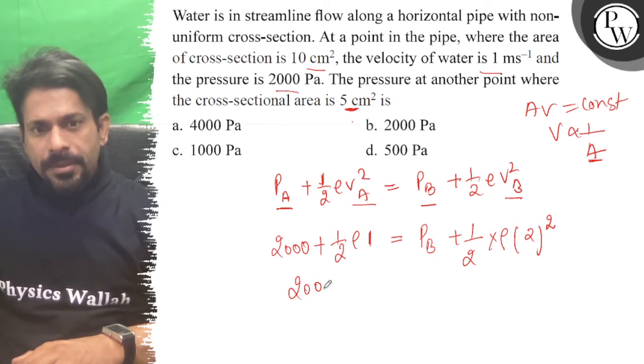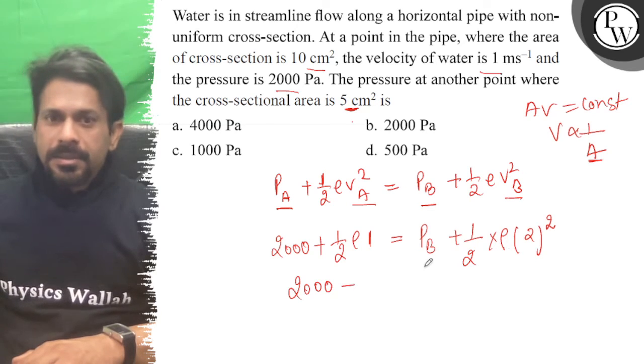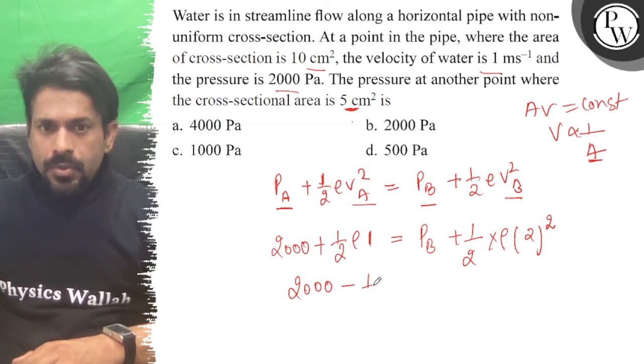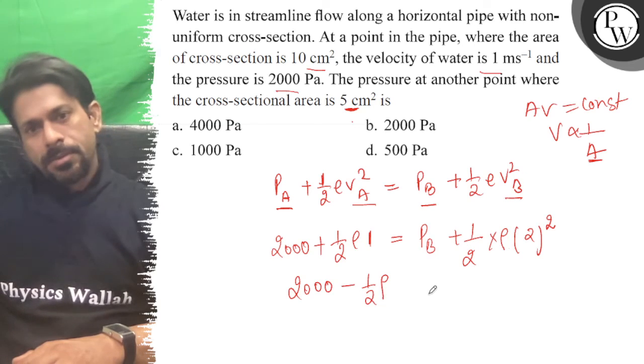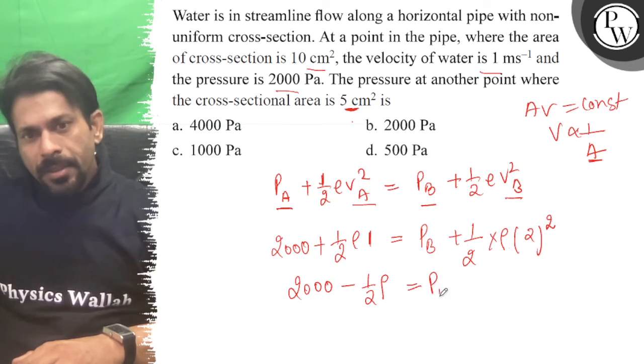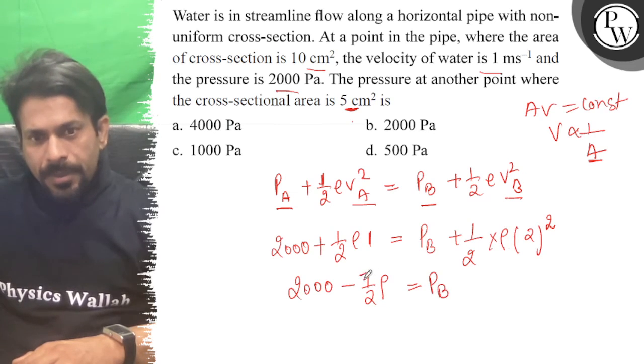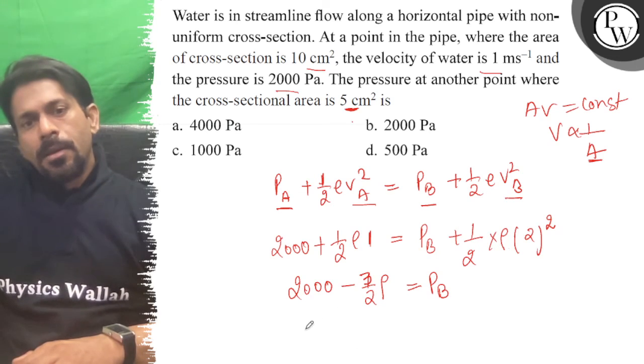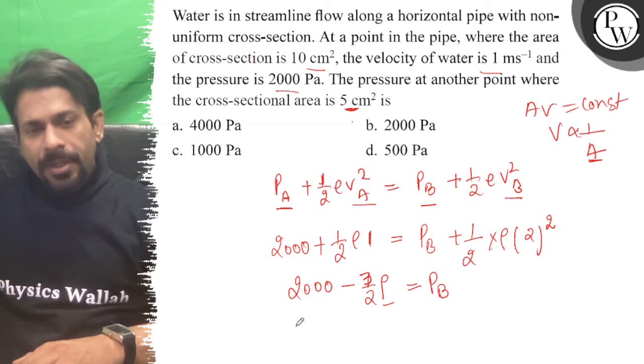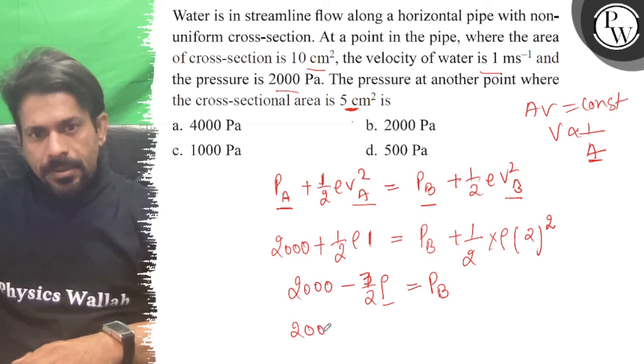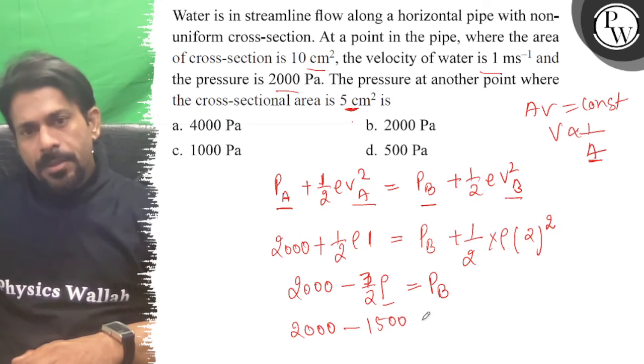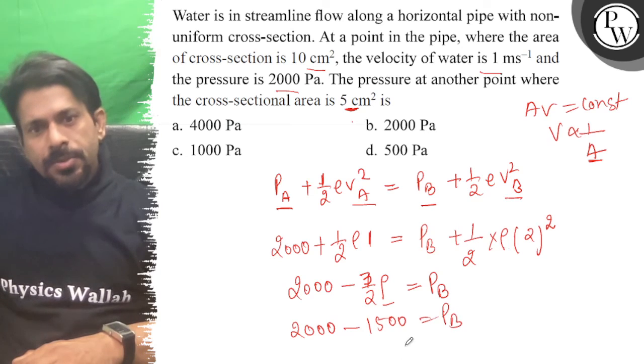So 2000 minus 1/2 rho... 2000 minus 1/2 rho equals Pb. 2000 minus 1500 equals Pb. Pb equals 500 Pascal.